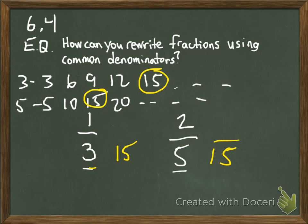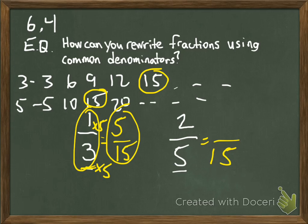We're going to use 15 as our common denominator. We'll write equivalent fractions for one-third and two-fifths using 15 as the common denominator. One-third equals what over 15? Since 3 was multiplied by 5 to get 15, we multiply the numerator by 5 as well: 1 times 5 equals 5. Therefore, one-third and five-fifteenths are equivalent fractions.